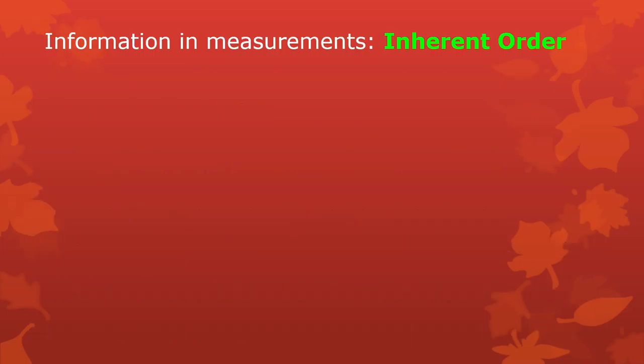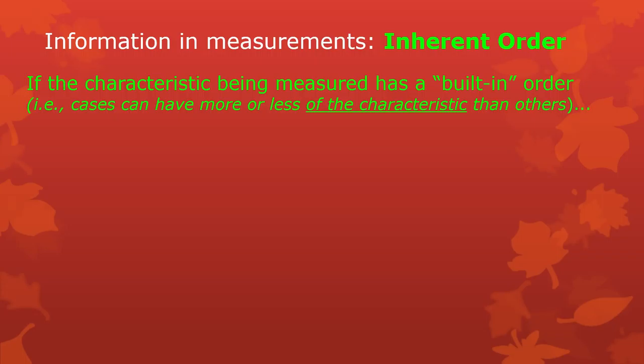The next kind of information that might be included in measurements is an inherent order — one piece of information more than was in the previous kind. It only works if the characteristic that you're measuring has an order. You can't say you're going to measure the order in religion, or that male is greater than female. The thing has to be ordered in the first place — there has to be a natural order to it.